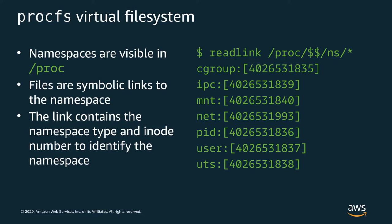The proc virtual file system is a mechanism the Linux kernel exposes for introspection of its data, including information about the namespaces to which each process belongs. Inside the process directory is a directory called 'ns' containing symbolic links to the namespace. These use the symbolic link structure to note the namespace type and inode number the kernel uses to identify the namespace. The number itself isn't really meaningful, but you can use it to understand whether two processes belong to the same namespace.